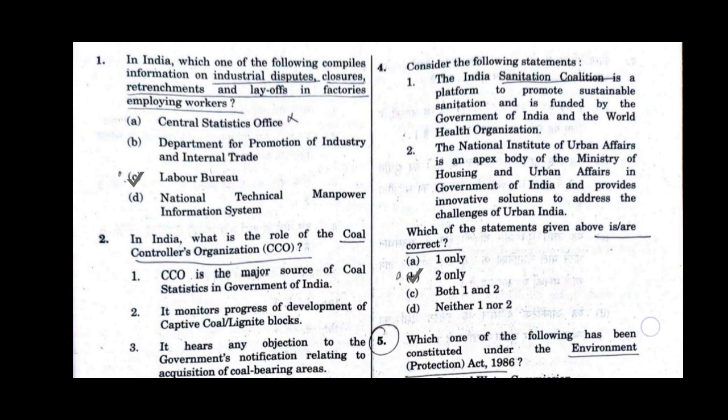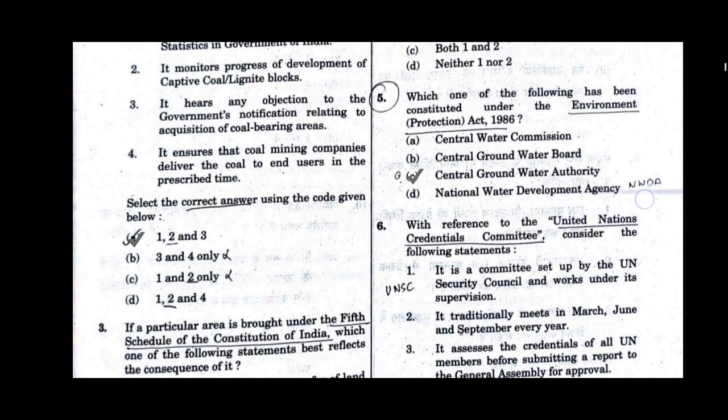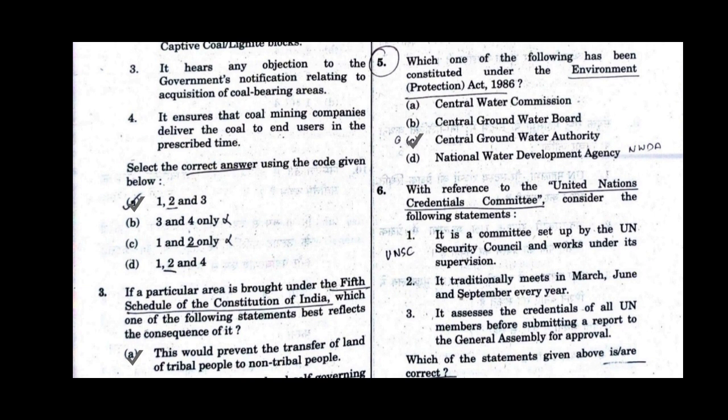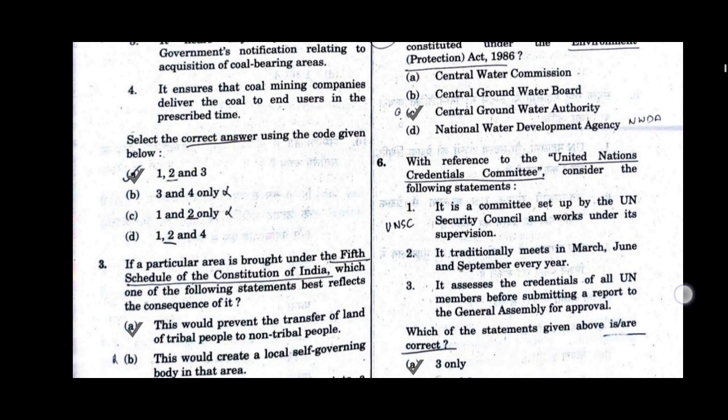Question number 5. Which one of the following has been constituted under the Environment Protection Act 1986? Option C will be the correct answer: Central Groundwater Authority.